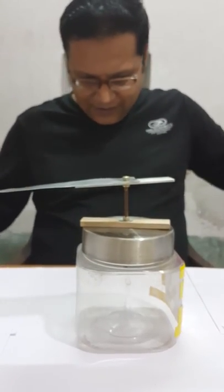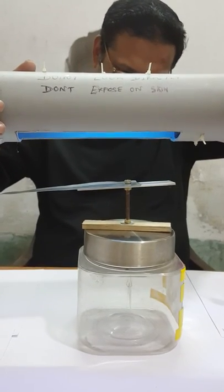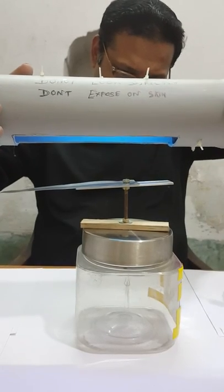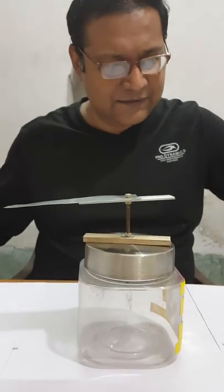Now let's see what happens if I hold my UV light over here. There is no change in the divergence of the leaf. You can see it is as it is. Now why such a difference?